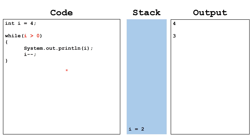We go back and check is i still greater than zero — it is. We output i, decrement, and check again. We decrement i to zero, go back to the top, check: is i still greater than zero? This boolean expression is now false, so we terminate the loop and continue on with any code afterward. As mentioned, we could have written this as a for loop.